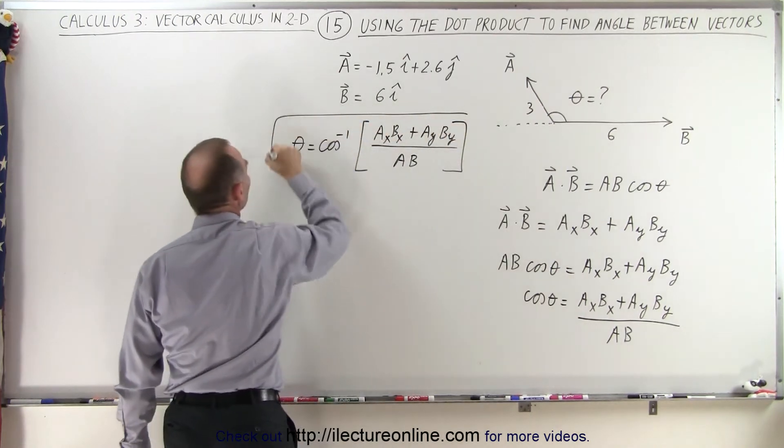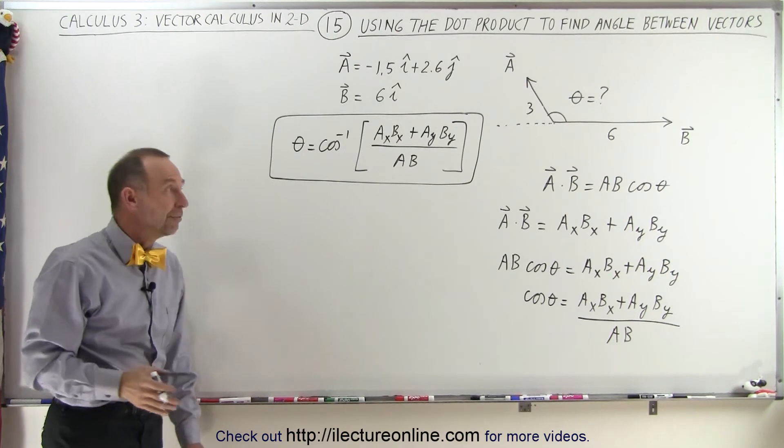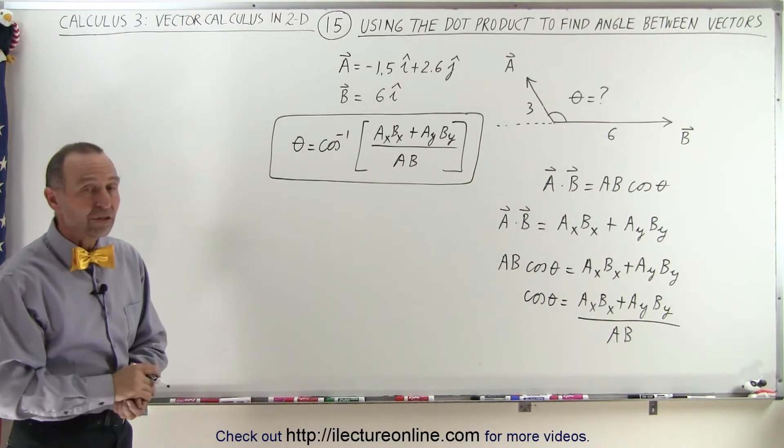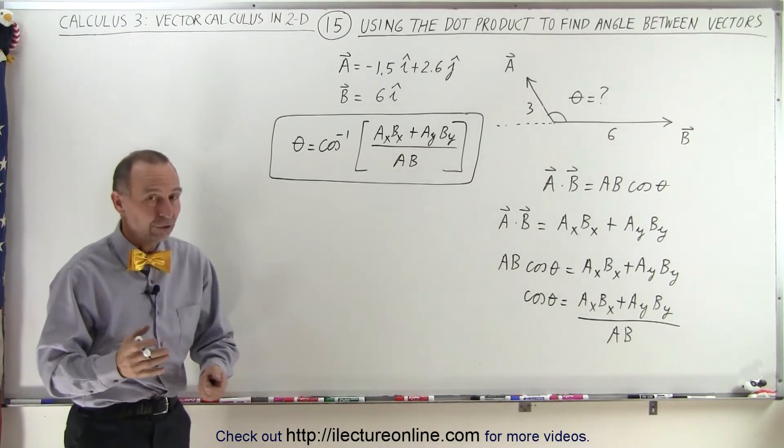And this now becomes our method of finding the angle between any two vectors if, of course, the magnitudes of the X and Y components of each vector are known. And from that, we can also, of course, find the magnitudes if those are not known initially.